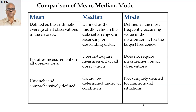Median cannot be determined under all conditions. Even though median is the middle value — the measure of location in the arranged order — when the data set contains an even number of observations, for example 10 observations, median is the average of two middle values, such as the average between the fifth and sixth value. Therefore, I cannot claim it is a single median value. Mode is not unique because there are situations with more than one peak point — there could be bimodal or multimodal situations in descriptive analytics.